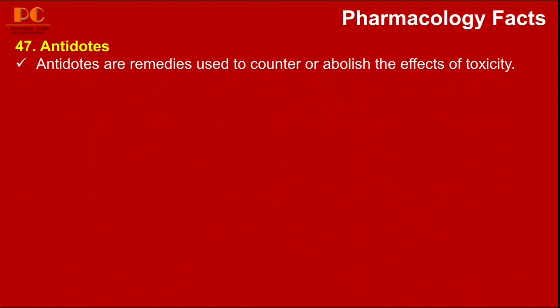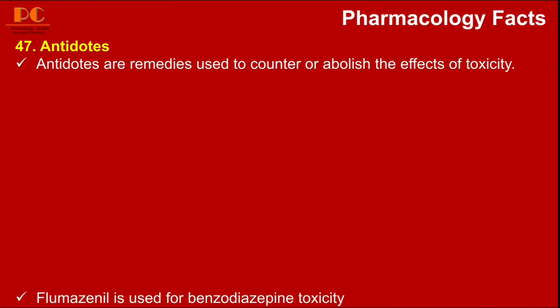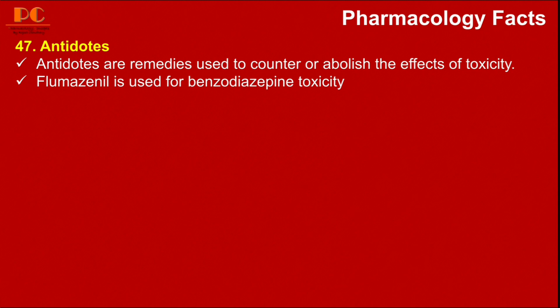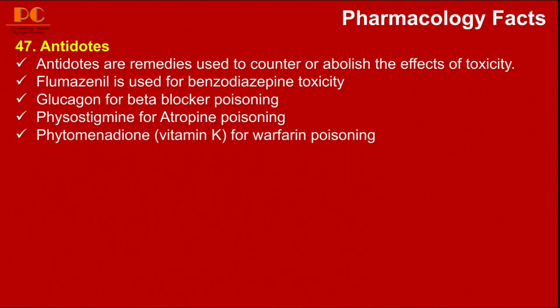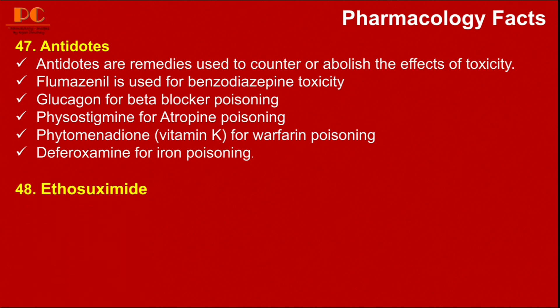The next fact is about antidotes. Antidotes are drugs or medicines used to counter or abolish the effects of toxicity from other drugs or poisons. For example: flumazenil is used for benzodiazepine toxicity; glucagon for beta-blocker poisoning; physostigmine for atropine poisoning; atropine for muscarinic poisoning; phytonadione (Vitamin K) for warfarin poisoning; and deferoxamine for iron poisoning. A separate video will be made covering various antidotes in detail.